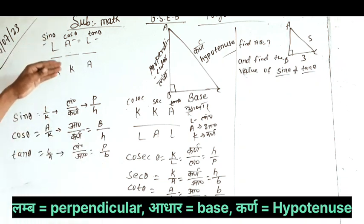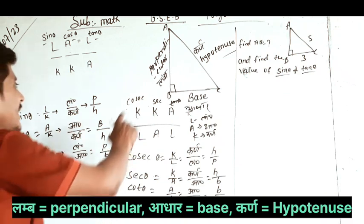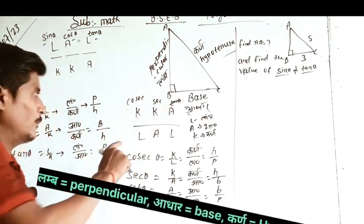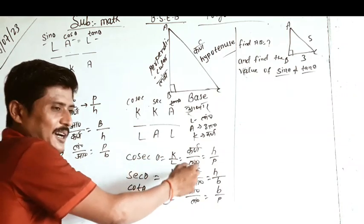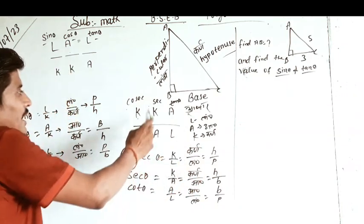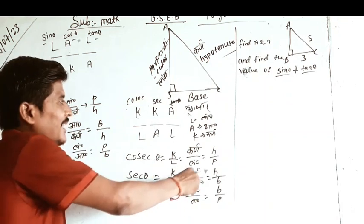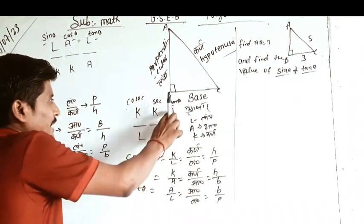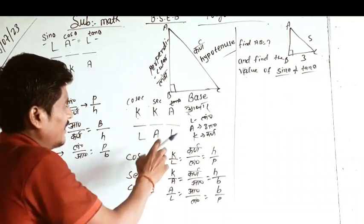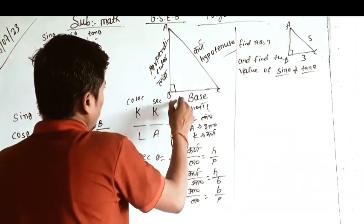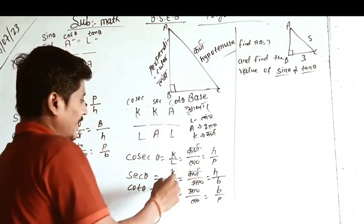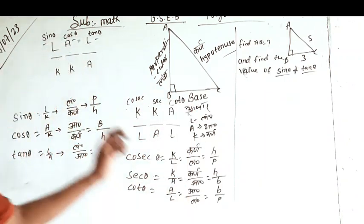Now reverse it. Kakka by Lal. Cosec is karn by lambe, which is h by p. Sec is karn by aadhar, which is h by b. And cot theta is aadhar by lambe, which is base by perpendicular, b by p.